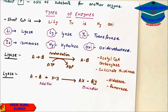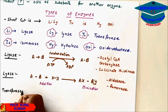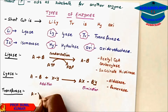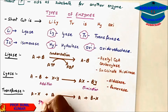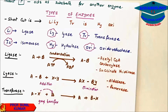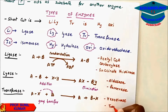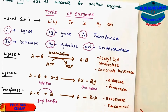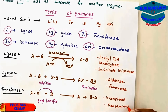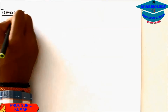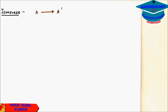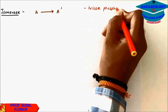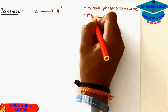Transferase, as the name suggests, transfers a functional group to the next compound. Examples include hexokinase and transaminase. Isomerase is used to create isomers — compounds with the same formula but different structure. An example of isomerase is triose phosphoisomerase.